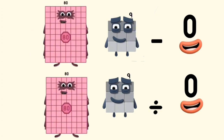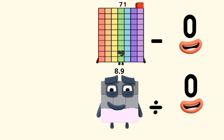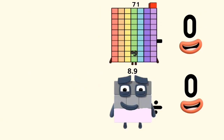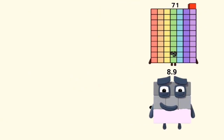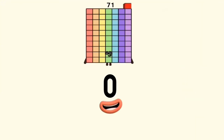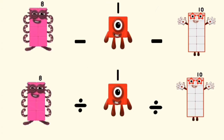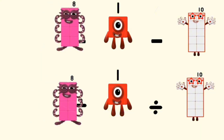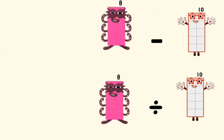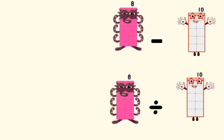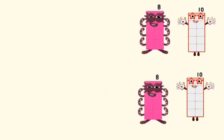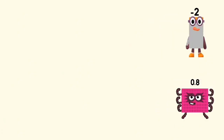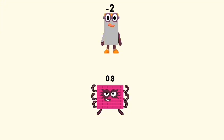80 minus and divided by 9 equals negative 2 and 0.8.